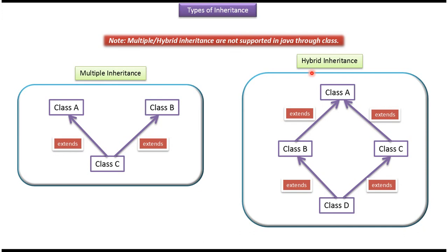The fifth one is Hybrid Inheritance. Here you can see the example: Class T extends Class B and Class C, and Class B extends Class A and Class C extends Class A. This kind of Hybrid Inheritance is also not supported by Java. This is about Types of Inheritance, and thanks for watching.